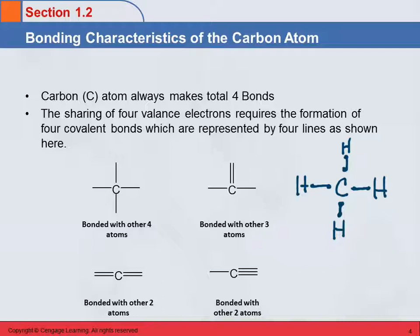So now carbon is counting all of these electrons as belonging to it. 2, 4, 6, 8. So carbon has an octet, and this is a stable molecule. Carbon makes 4 bonds. So here, the carbon atom always makes 4 bonds. And that's because it has 4 valence electrons.